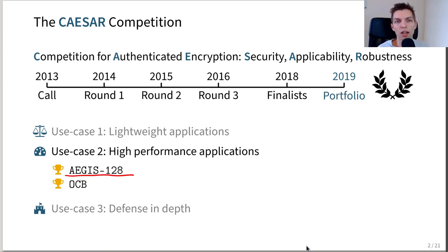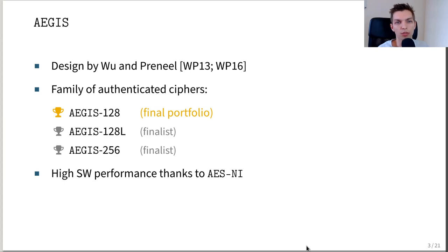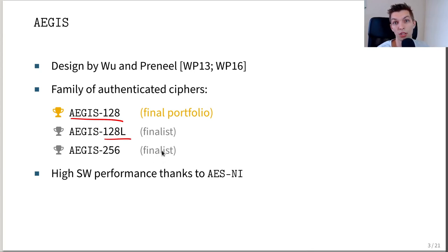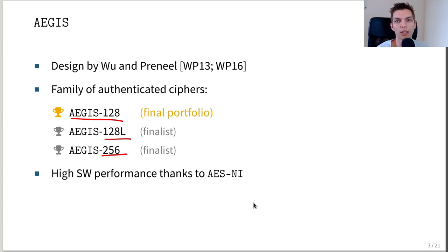This cipher was designed by Hong-Chun Wu and Bart Brehnel, who proposed a family of authenticated ciphers with three members: Aegis-128, which was part of the final portfolio; Aegis-128L, which features a more efficient design; and Aegis-256, which claims 256 bits of security. All three members have very high software performance thanks to the AES-based state update function.